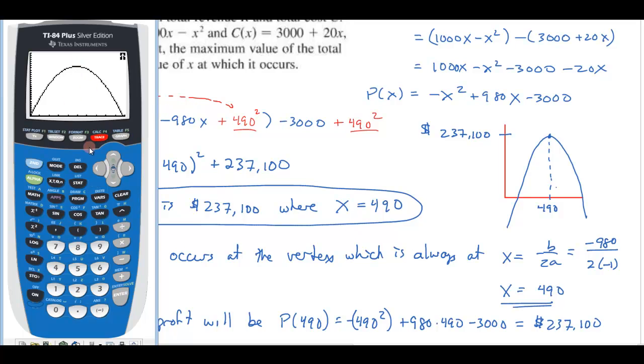So then if I were to just calculate the maximum number four, we'll give it a left bound. So go on the left hand side of the maximum, hit enter. Give it a right bound. Go over on the right hand side of the maximum, hit enter. And give it a guess. Just get up there kind of close. And sure enough, it says the maximum is 489.999, which is just round off error from the way it computes it. And the y value is 237,100. All right, so I hope you find that helpful.